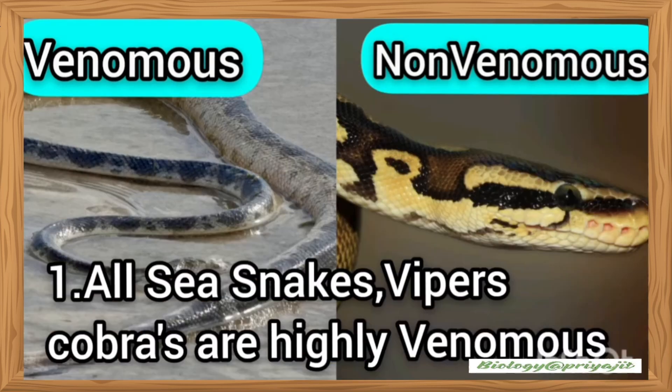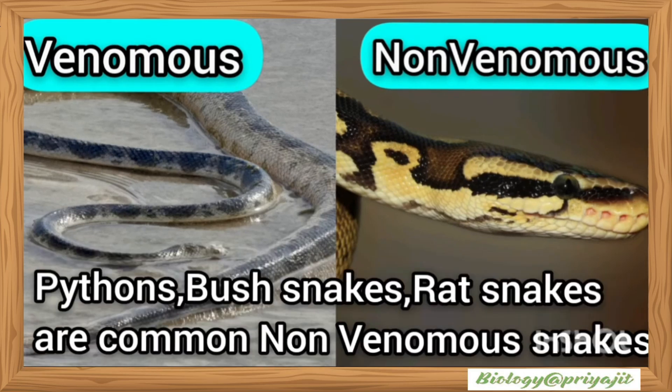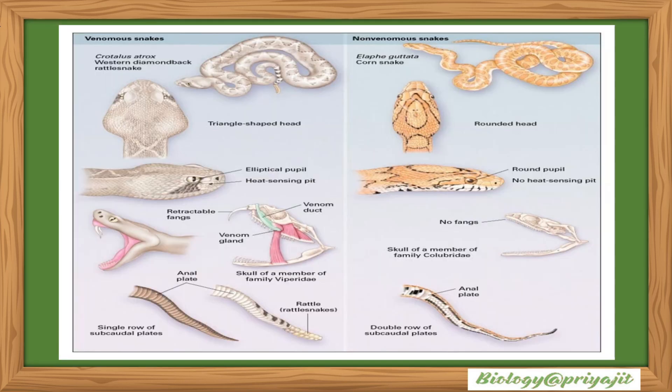All sea snakes, vipers, and cobras are highly venomous, while pythons, boa snakes, and rat snakes are common non-venomous snakes.